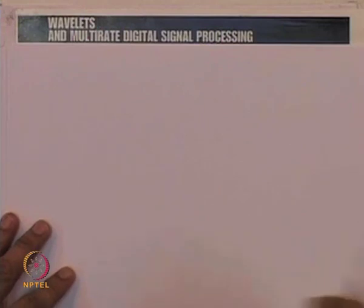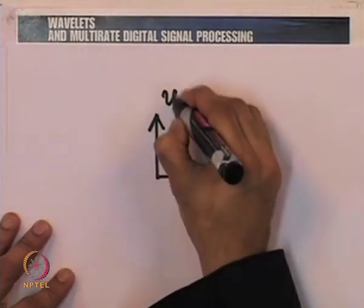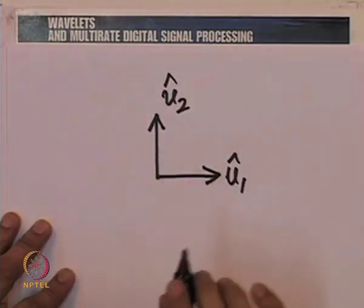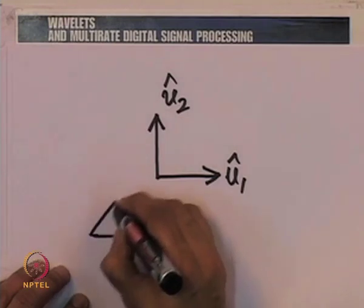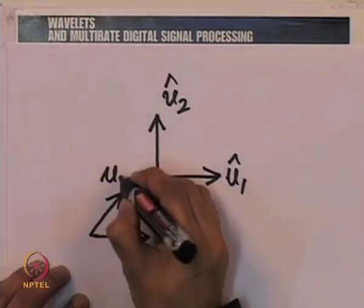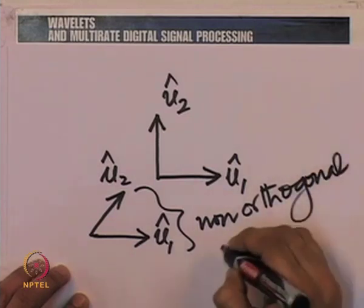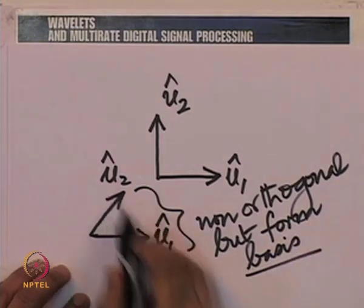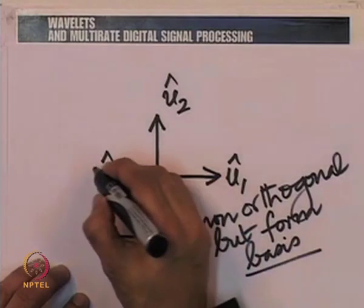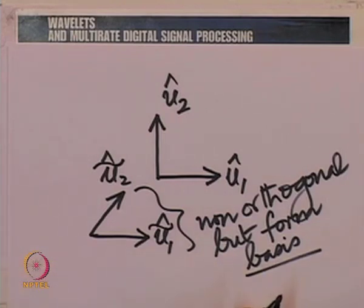In a two-dimensional space, if you have two orthogonal unit vectors u_1 and u_2, this forms an orthogonal system. But suppose instead you have unit vectors ũ_1 and ũ_2 that are not orthogonal — they are linearly independent but not orthogonal. These two vectors do form a basis in two-dimensional space because they are linearly independent. But if I wish to obtain the coordinates of any vector x expressed as c_1 ũ_1 plus c_2 ũ_2, I cannot obtain c_1 and c_2 by taking dot products with ũ_1 and ũ_2, because they are not orthogonal.